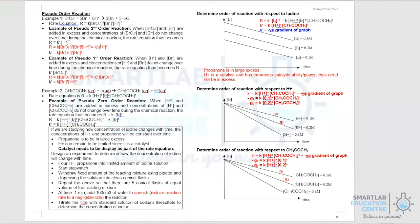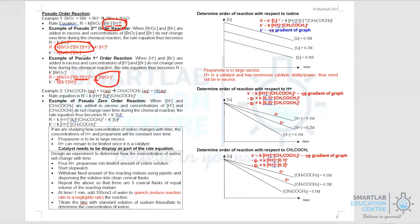Let us now take a look at pseudo-order reactions. In any chemical reaction, we typically have more than one reactant, and it is not practical to allow all concentrations to change simultaneously when trying to determine the order with respect to each. The way to deal with this is to allow only one reactant's concentration to decrease with time while the others remain largely unchanged. By placing the other reactants in large excess, their concentrations are essentially constant and can be subsumed into the rate constant K to give a new pseudo rate constant K'. This reduces what may be a total order of 4 into, for example, a pseudo-first-order reaction.